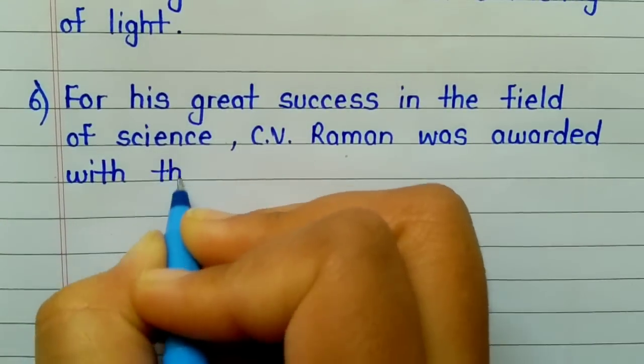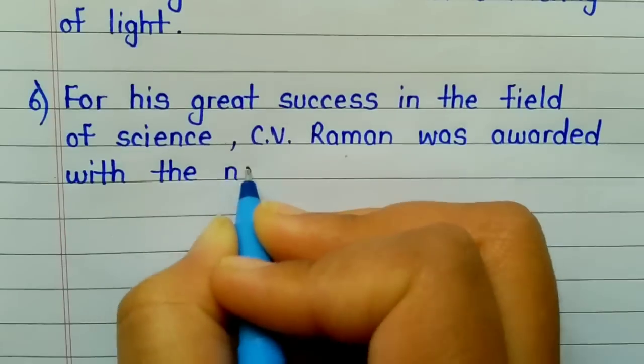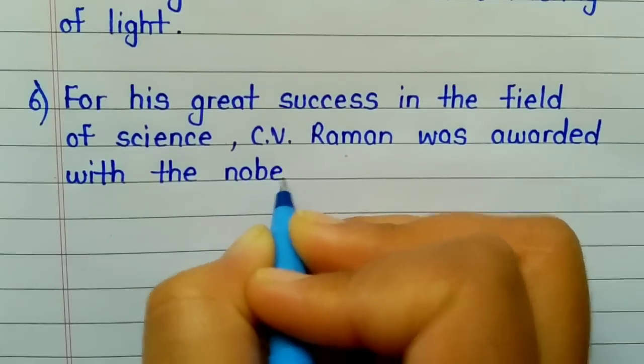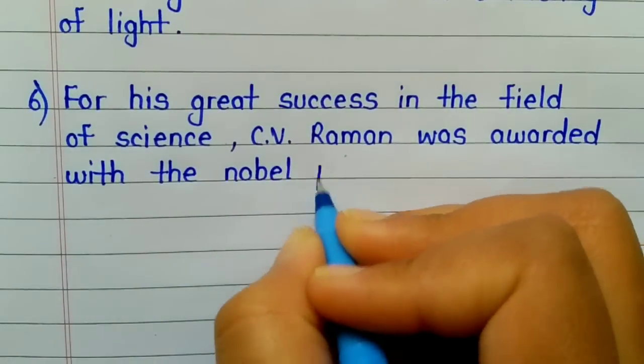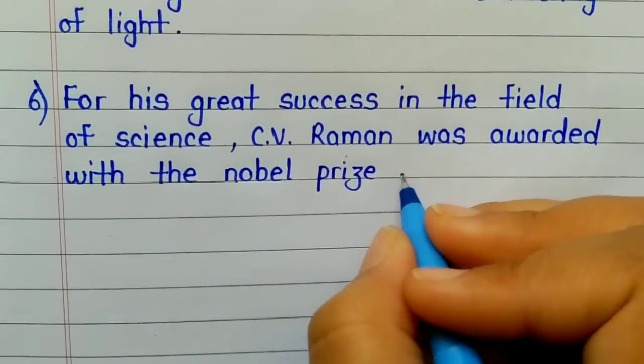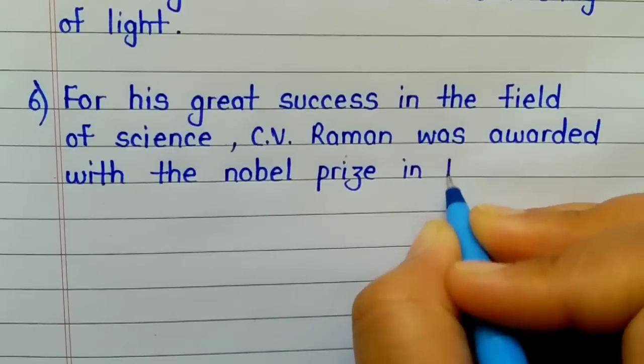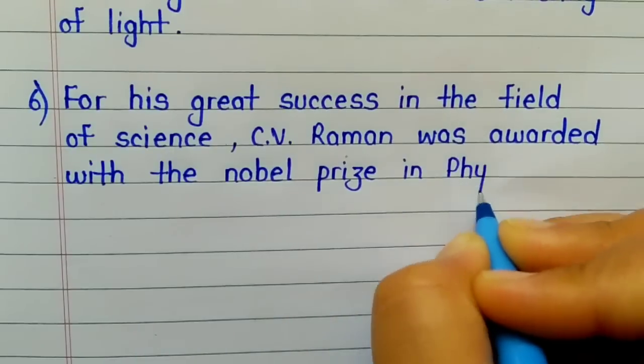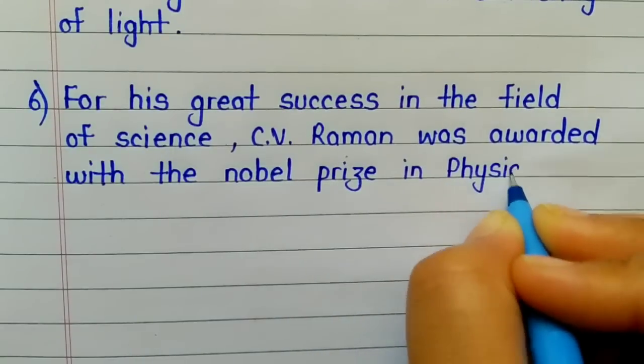Number 6. For his great success in the field of science, C.V. Raman was awarded with the Nobel Prize in Physics in 1930.